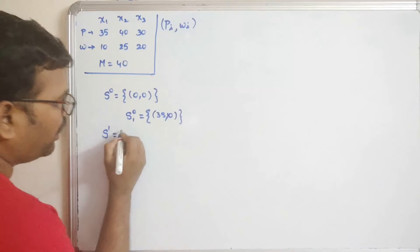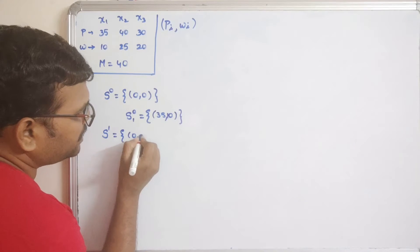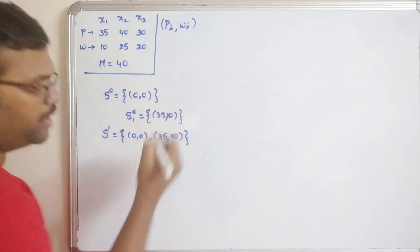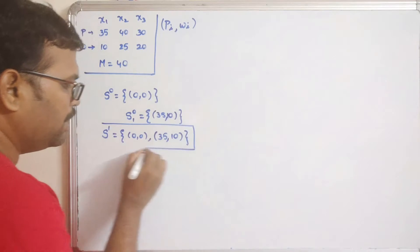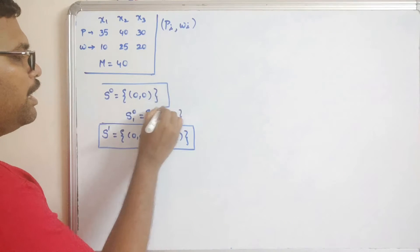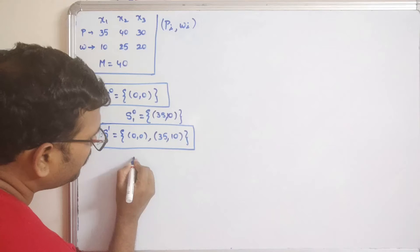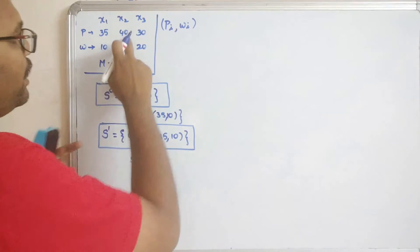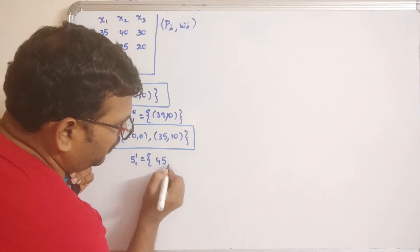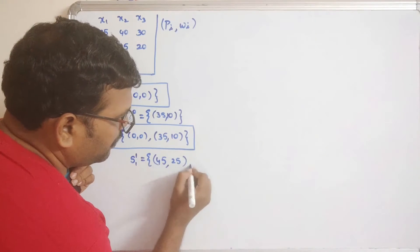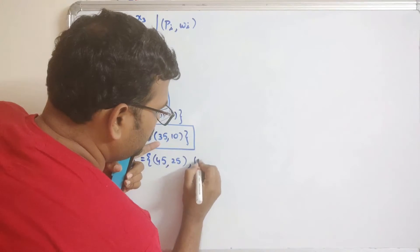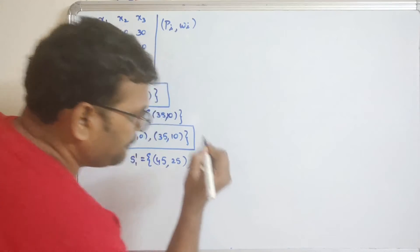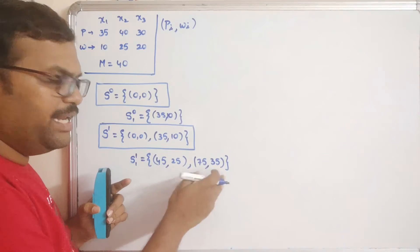With one object, S1 consists of the empty sack and the sack after inserting object 1. So S1 = {(0,0), (35,10)}. Now inserting the second object (profit 40, weight 25) into S0: we get (40, 25). Adding it to S1's element (35,10): 35+40=75 profit, 10+25=35 weight, giving (75, 35).